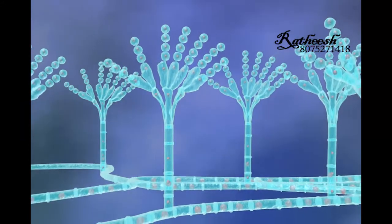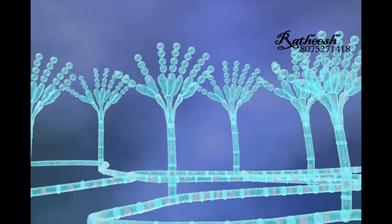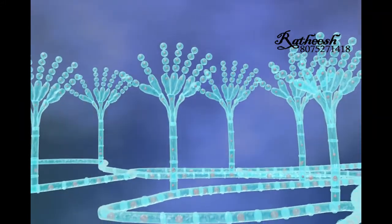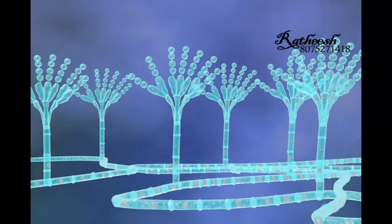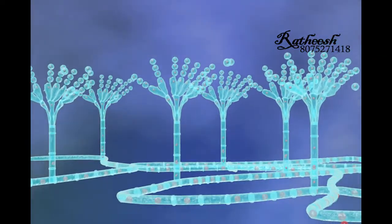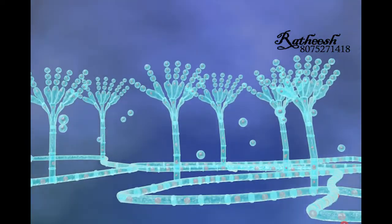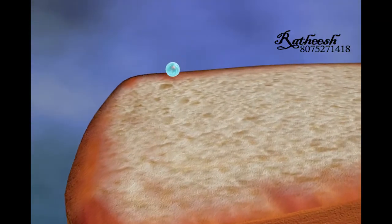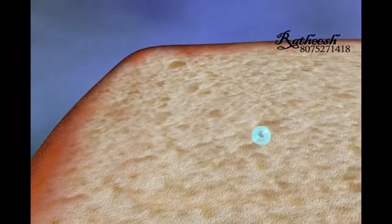Conidia, thus formed, are then dispersed into the air and when they fall on a suitable substratum, produce new fungal hyphae.